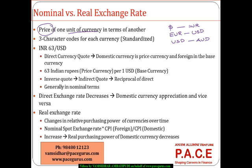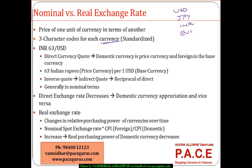In the foreign exchange markets across the world, for each currency there is a three-character code that is standardized. The US dollar is represented as USD, Japanese yen as JPY, Indian rupee as INR, euro as EUR, and Australian dollar as AUD. So we find standardization in the notation used for different currencies across the world.